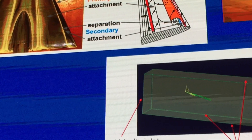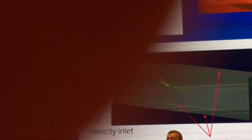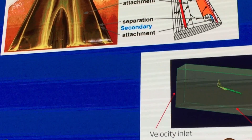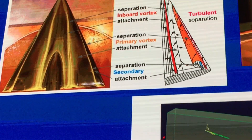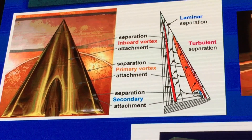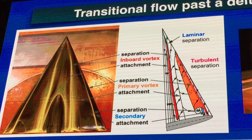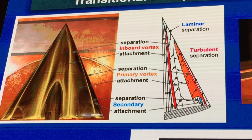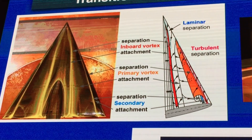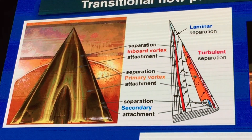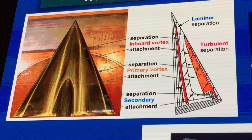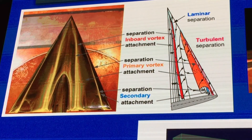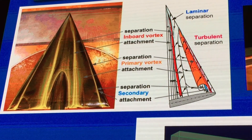The first test case tackled with McLaren is a flow over a delta wing. Delta wings are usually used for supersonic flight, but at the subsonic level they have flow features that are very interesting to understand and resolve. The flow is already complicated enough that if your solver can capture those features, you are at a good point.